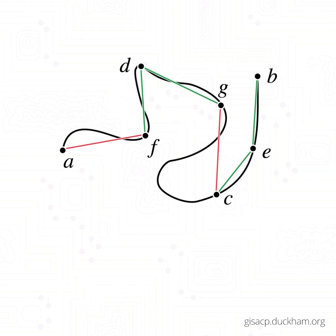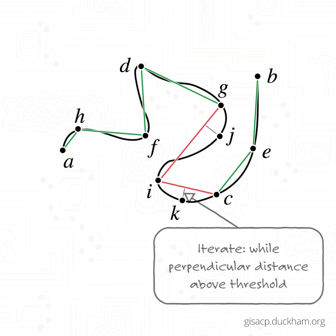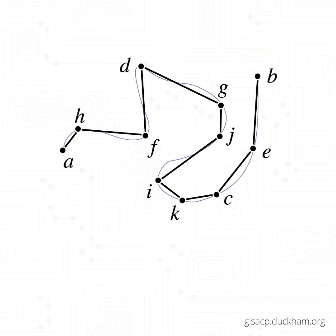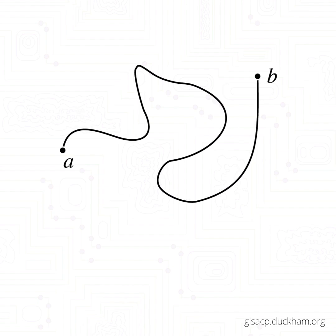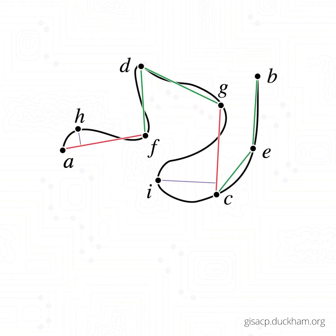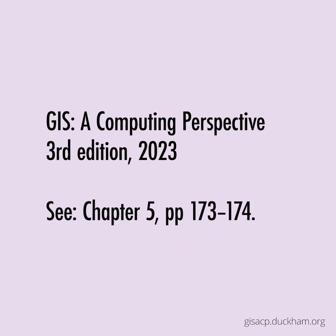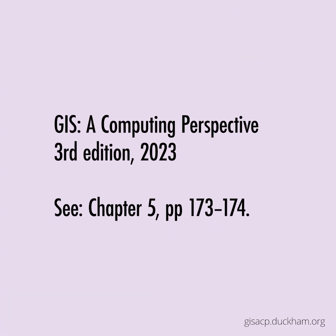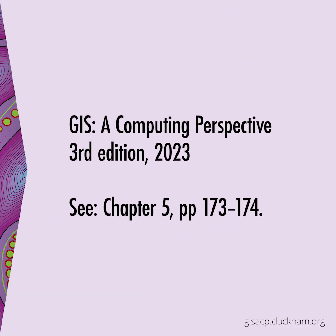The algorithm iterates as long as the perpendicular distance from a straight line segment to its furthest point on the arc is above some predefined threshold. Line simplification algorithms like Douglas-Peucker are fundamental to cartographic generalization, where maps need to be displayed at different scales.